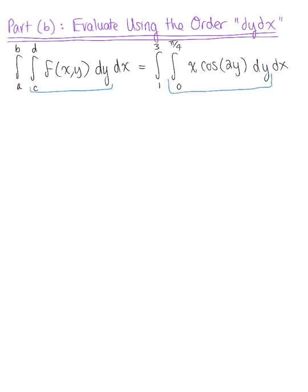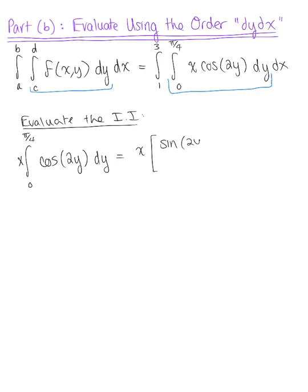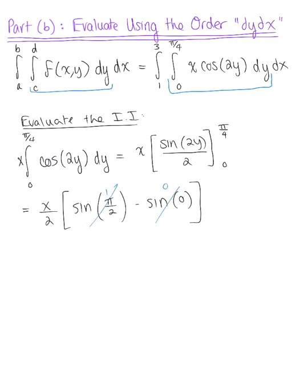I'm going to take my inner integral and evaluate this first. This is the integral from 0 to π/4. I'm going to pull x to the outside since we're holding it fixed, and we're integrating cosine(2y) with respect to y. This leaves us with x multiplied by sine(2y)/2, evaluated from 0 to π/4. So we have x/2 multiplied by sine(2 times π/4), which is π/2, minus sine(0). Sine(π/2) is 1, sine(0) is 0, leaving us with just x/2.